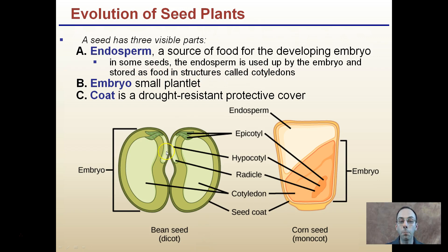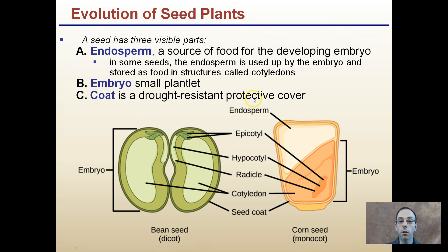We'll talk about monocots and dicots. Dicot — 'di' meaning two — has two seed leaves. Monocot means one seed leaf. The embryo is the small plantlet that contains the genetic information that will develop into the full-sized plant.